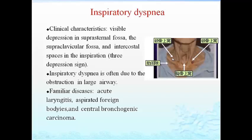The supraclavicular fossa, suprasternal area, and intercostal spaces are depressed because the diaphragm is working under too much pressure, describing what we call 'air hunger.' Inspiratory dyspnea is often due to obstruction in large airways, caused by diseases such as epiglottitis, acute laryngitis, aspirated foreign bodies, and central bronchogenic carcinoma — all of which block the large airways so inspiration cannot occur.